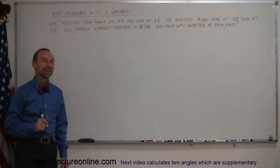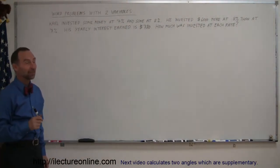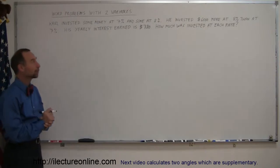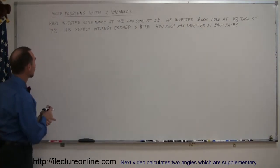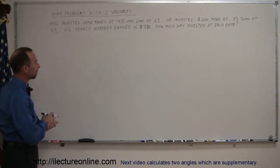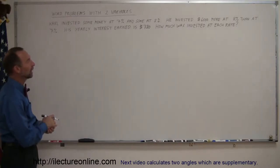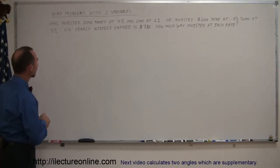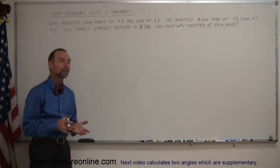Welcome to iLecture Online. Here's another example of how to do word problems using two variables in algebra. Carl invested some money at 7% and some at 8%. He invested $6,000 more at 8% than at 7%. His yearly interest earned is $780. How much was invested at each rate?